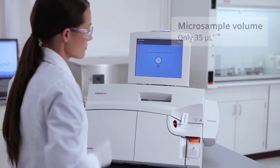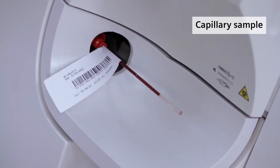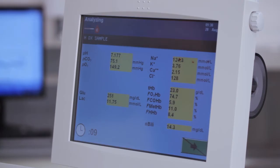The RapidLab 1200 system analyzes even the smallest of patient samples using capillary tubes. The automatic identification of a small blood sample instantly shifts the system into micro sample mode ideal for the NICU setting where whole blood volume is critical.